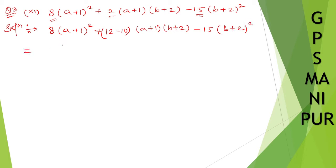Now, 8(a+1)² + 12(a+1)(b+2) - 10(a+1)(b+2) - 15(b+2)². Now, 8(a+1)². Let us take common.